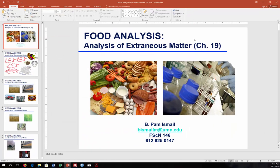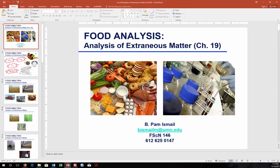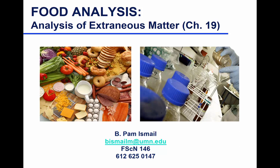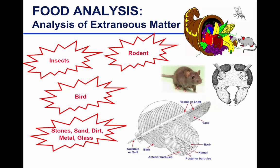This is the very last topic: analysis of extraneous matter. Lots of things fall under extraneous matter — it could be insects, whole insects or parts of insects, rodents, whole or parts, and also stones, sand, dirt, metal, and glass — all non-wanted extraneous matter.